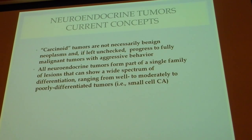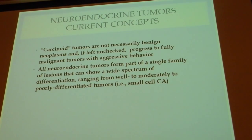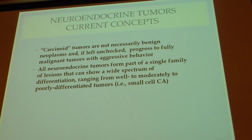Current concepts regarding carcinoid tumors recognize that these tumors are not necessarily benign. If left unchecked, they will grow indiscriminately, invade, enter the bloodstream, metastasize, and kill the patient. They have a definite potential for malignant behavior. In fact, numbers in the literature vary from 15 to 30 percent of pulmonary carcinoid tumors that will already have metastasized at presentation. To speak of these as benign is a disservice to the patient.